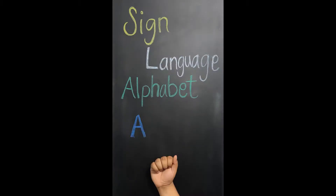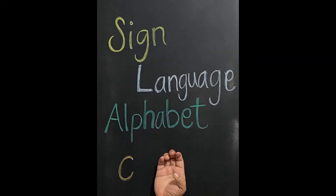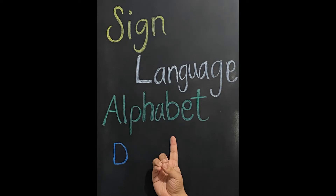The letter A is like a closed fist with your thumb on the side. B is your fingers up and together and your thumb going across your palm. C is your palm up, your fingers bent and your thumb kind of bent in as well, like if you're scratching. D is your pinky, ring finger, and middle finger all touching your thumb, and your index finger pointing up.